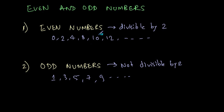So how do you find if a number is an even number or an odd number? The answer is simple. Just divide it by 2. If it is divisible, then it is an even number. If it is not, then it is an odd number.